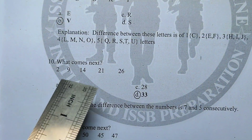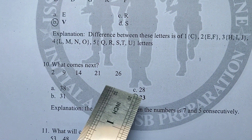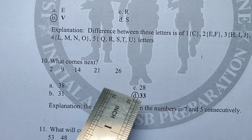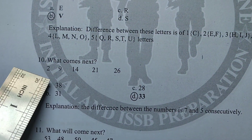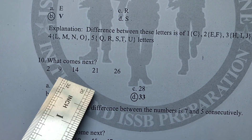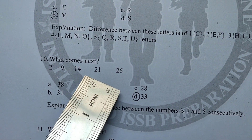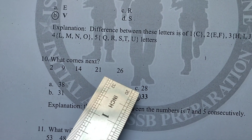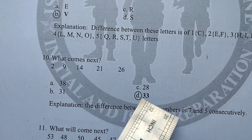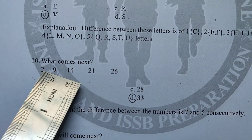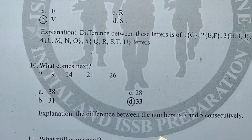Next series: 2, 9, 14, 21, 26. These series questions are easy once you see the pattern. The difference between 2 and 9 is 7, then 9 plus 5 is 14, then 14 plus 7 is 21, then 21 plus 5 is 26. Now 26 plus 7 is 33. The pattern alternates between adding 7 and adding 5, so 33 is the next answer.